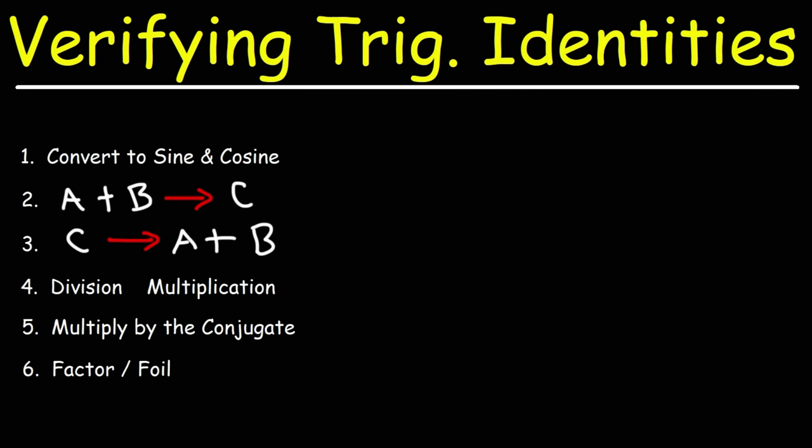For step two, sometimes you'll see a problem where there are two terms on the left but one term on the right. When you see this, if A and B are fractions, you can try to get the common denominator of both fractions, convert them into a single fraction, and go from there. Other times, you may need to factor to convert the two terms into one.